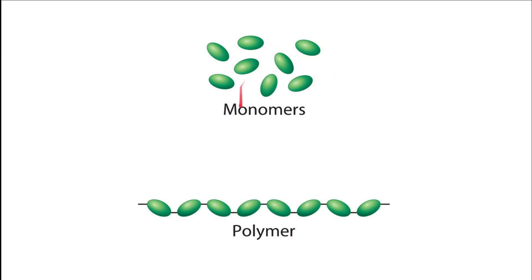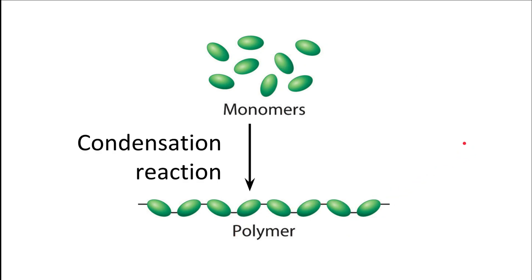Where monomers bond together, in carbohydrates the polymers are starch, cellulose, and glycogen; in nucleic acids they are DNA and RNA; and in proteins a polypeptide forms a protein. For monomers to join and form a polymer, we need a condensation reaction. When one monomer reacts with another, the condensation reaction causes water to be released — think of condensation forming on a cold pane of glass. A water molecule is released and, in return, a covalent bond is formed.